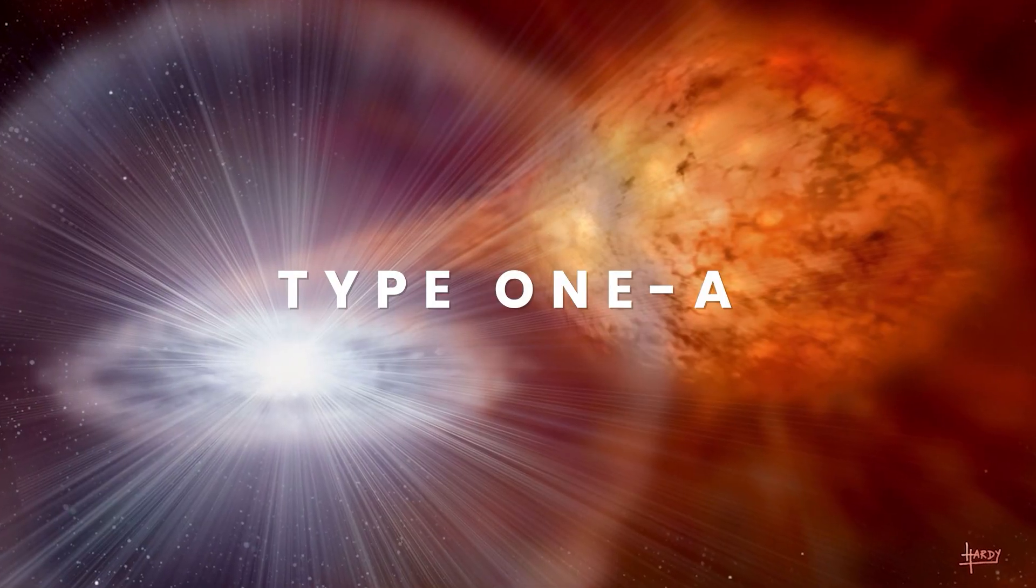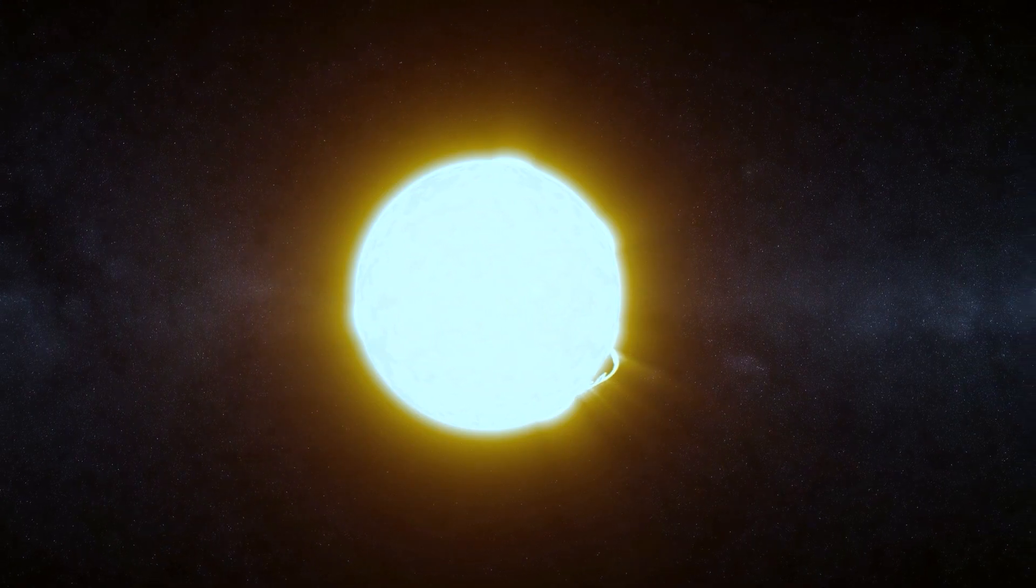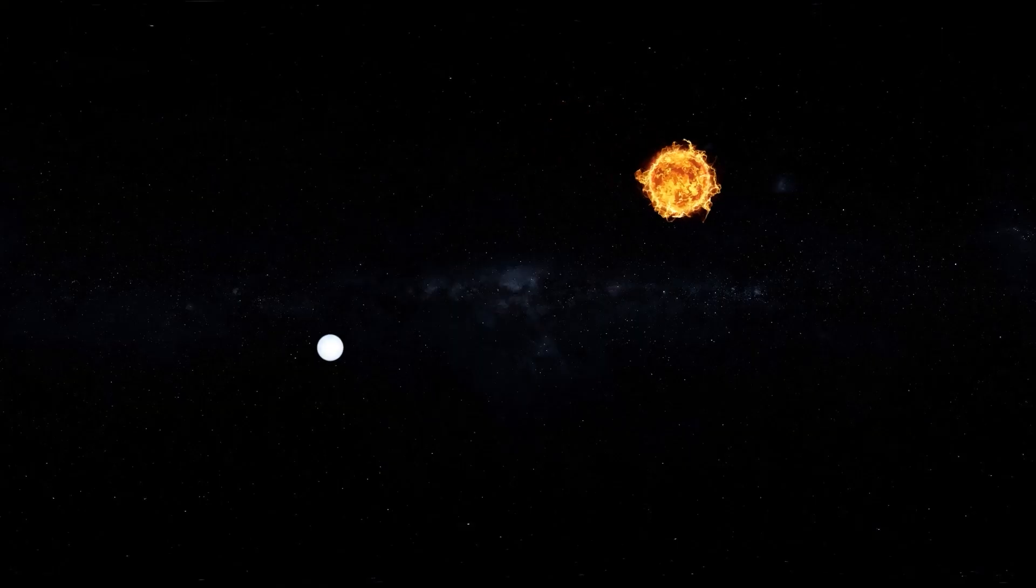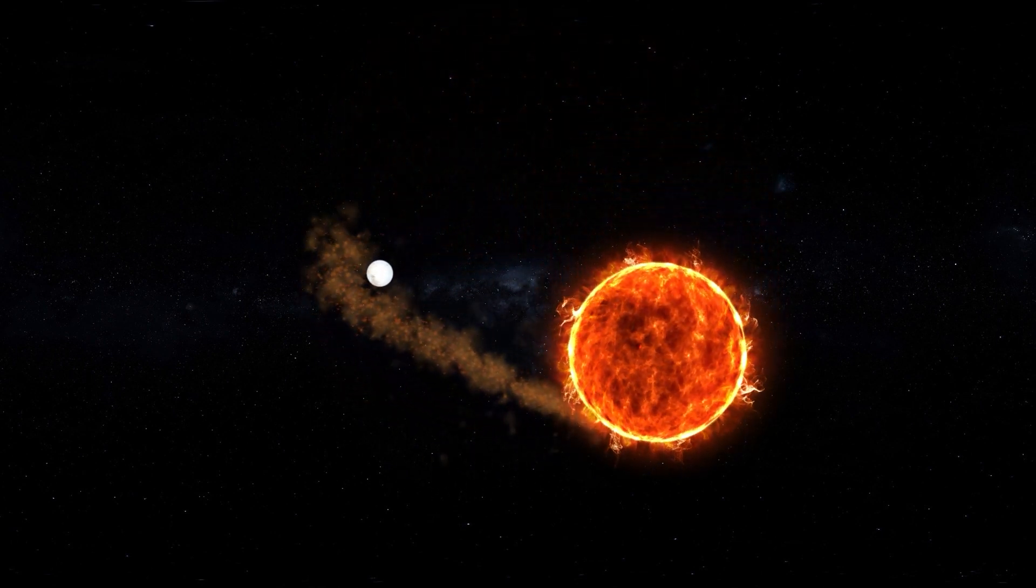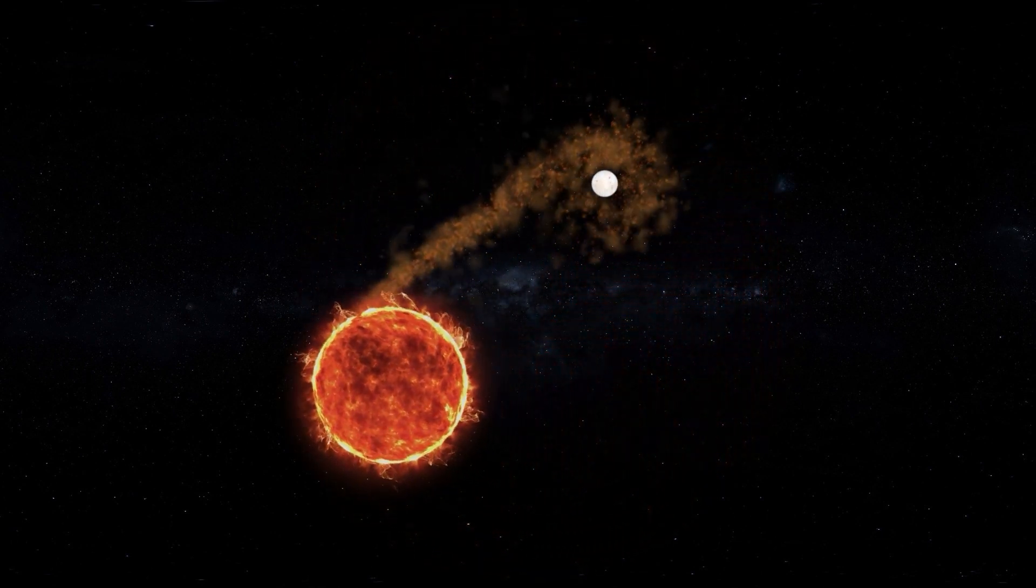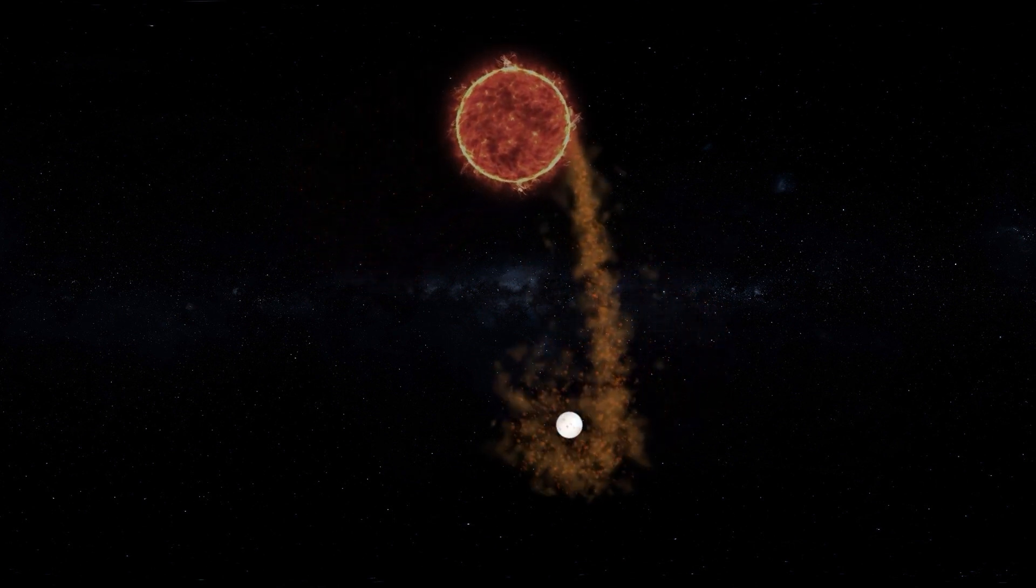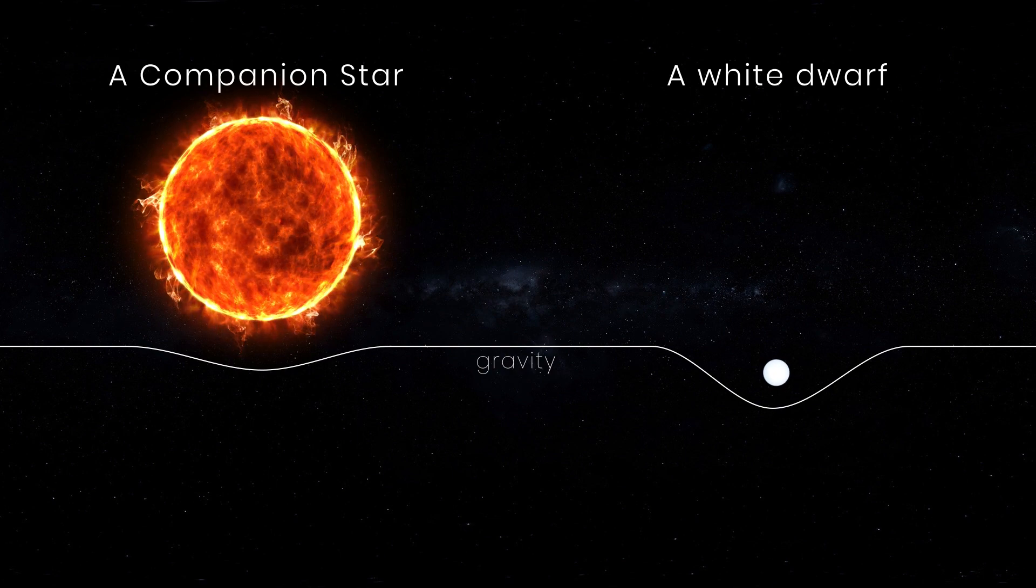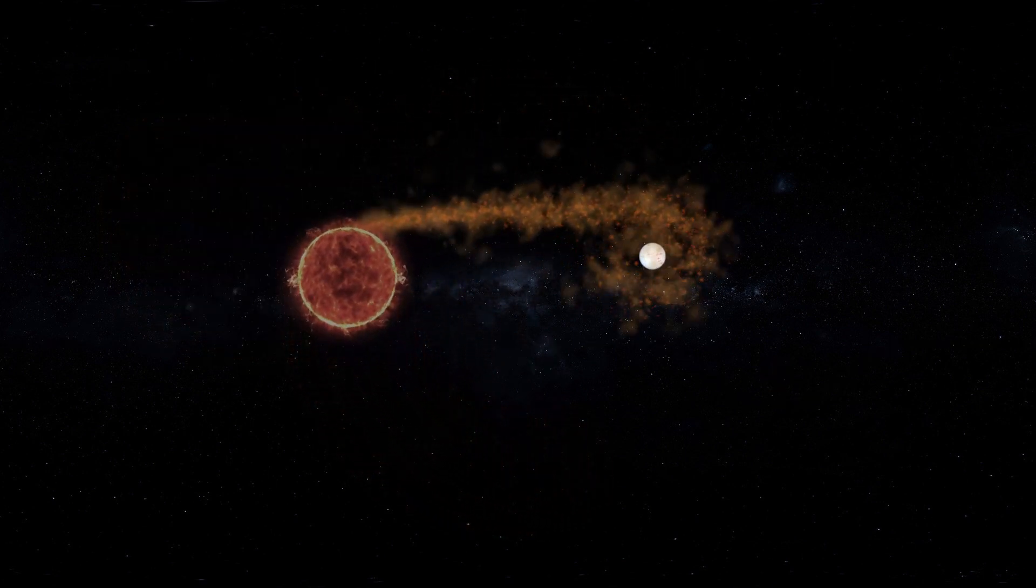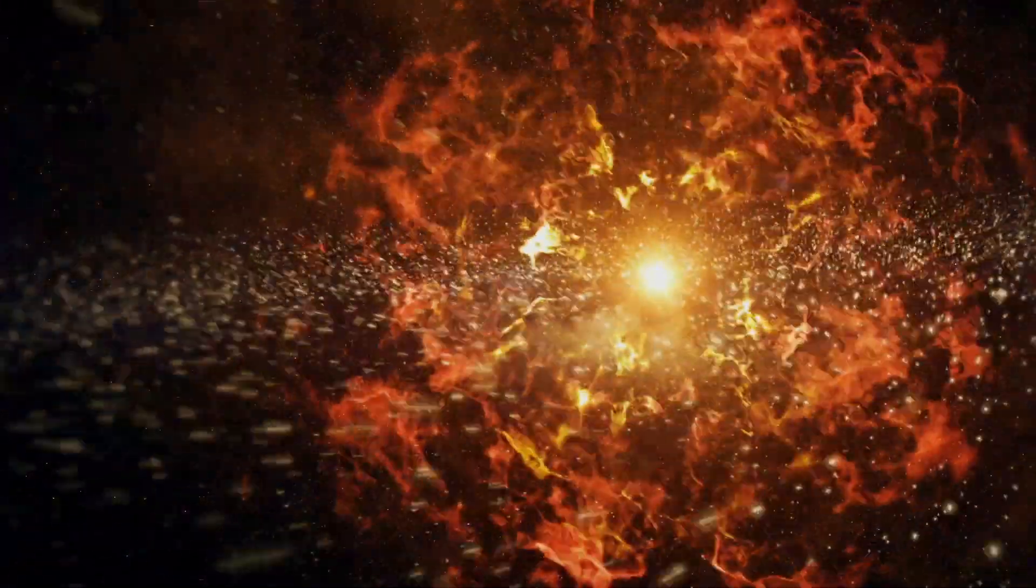A thermonuclear supernova, or Type 1A, is the result of an explosion of a white dwarf star in a binary system at least eight times the mass of the Sun after it becomes too massive to support itself after siphoning material from a nearby companion star. Matter piles up on the white dwarf's surface, and once it reaches a certain mass limit, a runaway thermonuclear explosion rips the white dwarf apart.